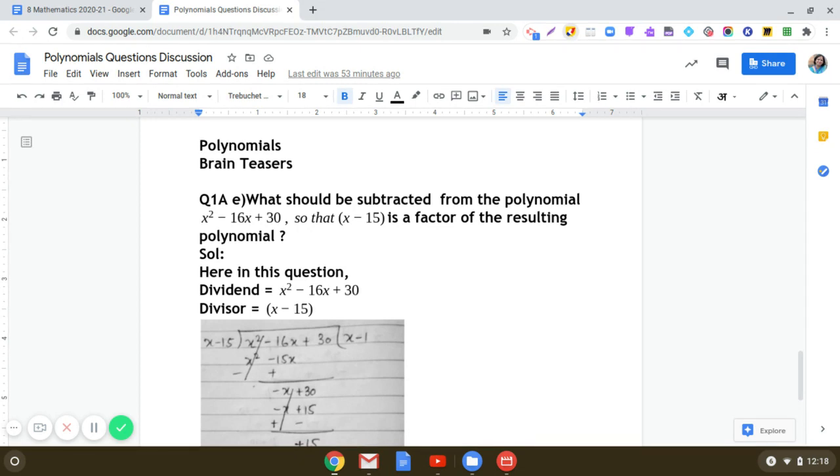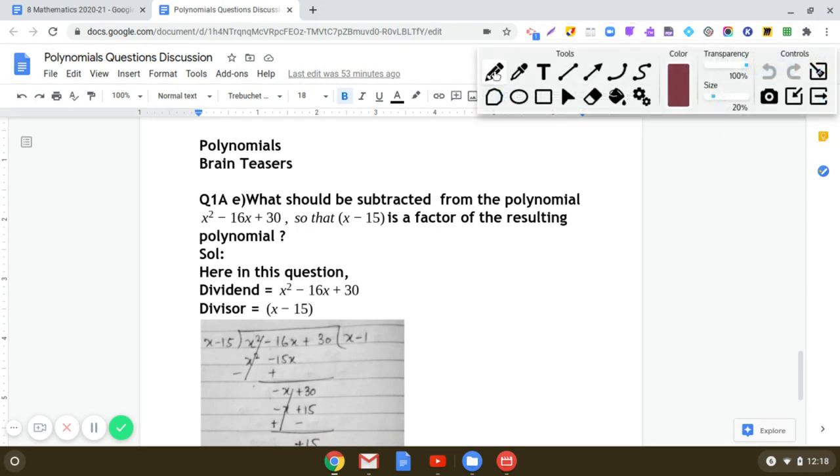When you do so, the first term in the quotient comes out to be x. So x multiplied by x - 15 will be equal to x² - 15x. Subtract, so x² minus x² gets cancelled. -16x + 15x will give us -x, and then you copy down +30.